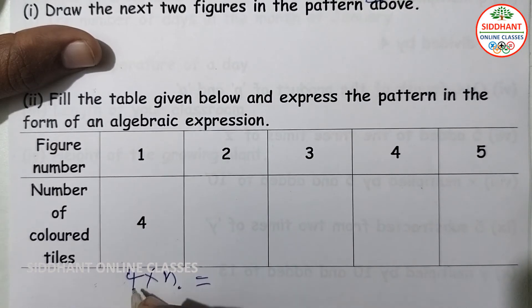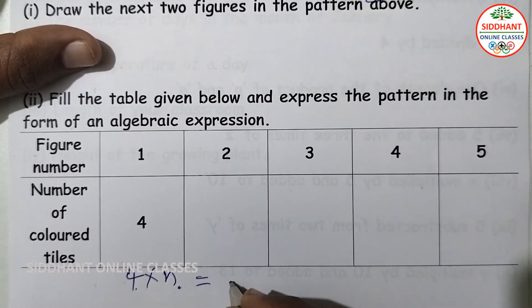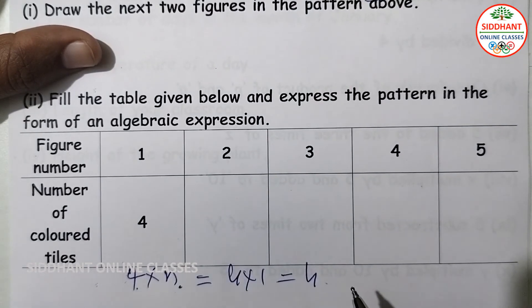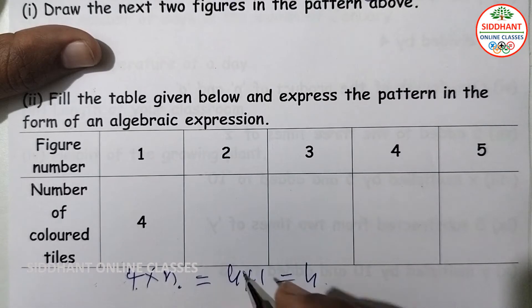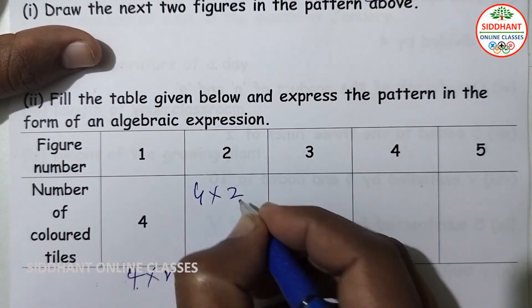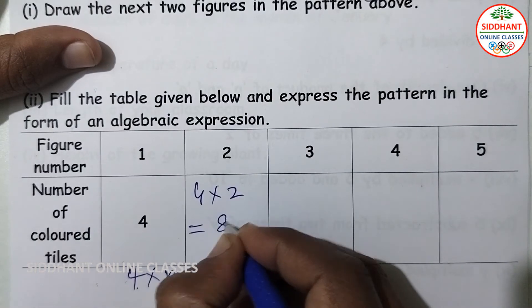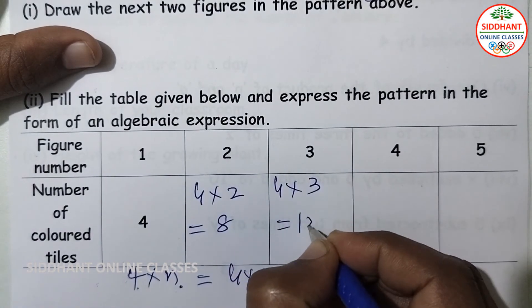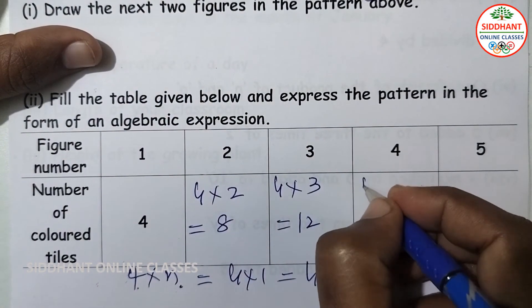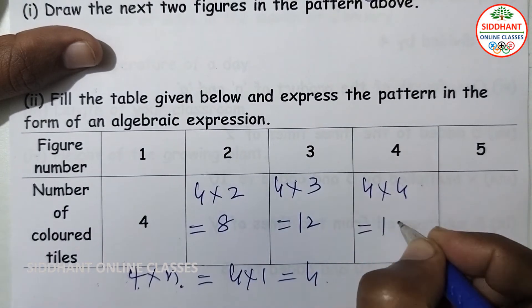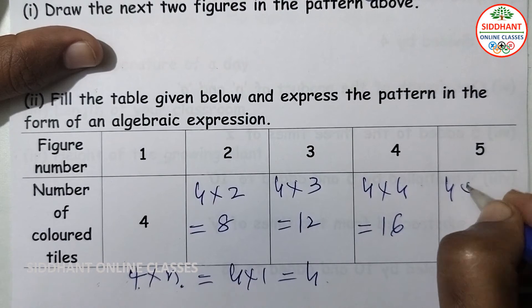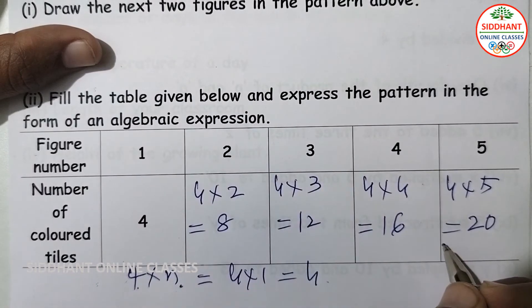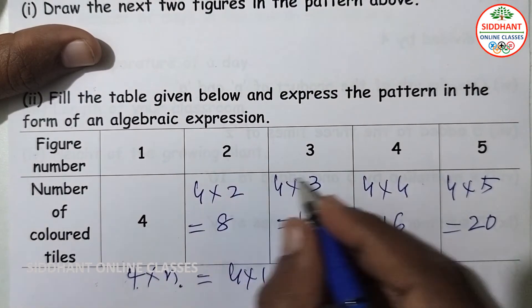In figure 2, it is 4 into 2, so the number of colored tiles is 8. Figure 3 gives 4 into 3, which is 12. Figure 4 gives 4 into 4, which is 16. Figure 5 gives 4 into 5, which is 20. These are the number of colored tiles required in the following figures.